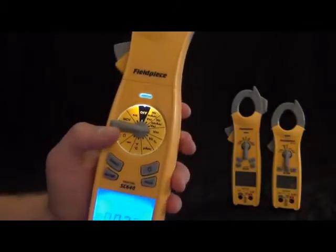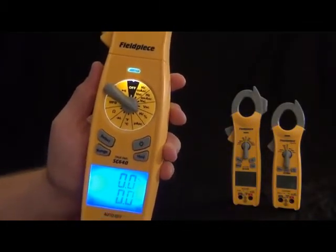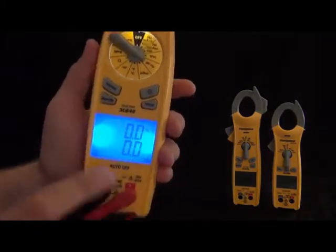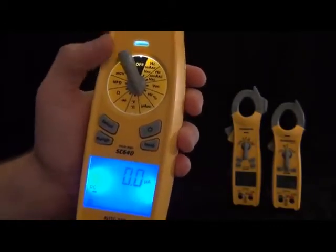Then we got microamps DC for flame rectification. We still have the K-type thermocouple probe and temperature. It'll display both Fahrenheit and Celsius at the same time, depending on whatever you like.